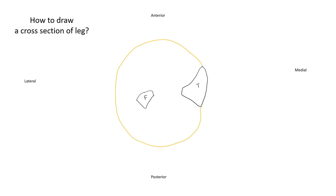Now let us mark the three borders of the tibia: the anterior border, medial border, and the interosseous border. Now let's mark the borders of the fibula — the fibula has an anterior border, an interosseous border, and a posterior border. Comparing the two: both tibia and fibula have an anterior and an interosseous border, but the tibia has a medial border whereas the fibula has a posterior border.